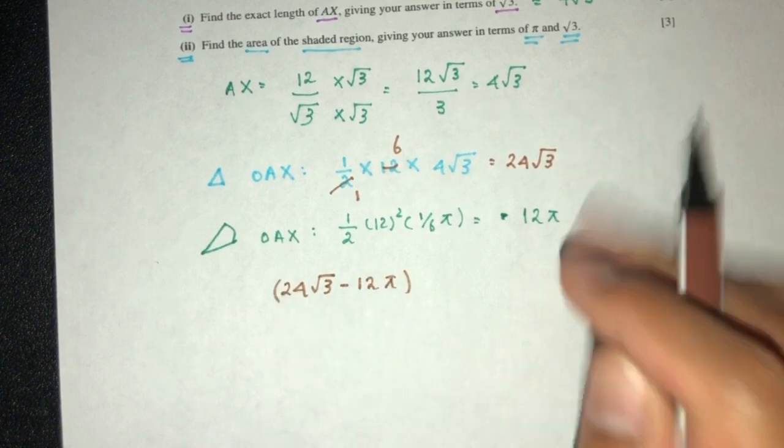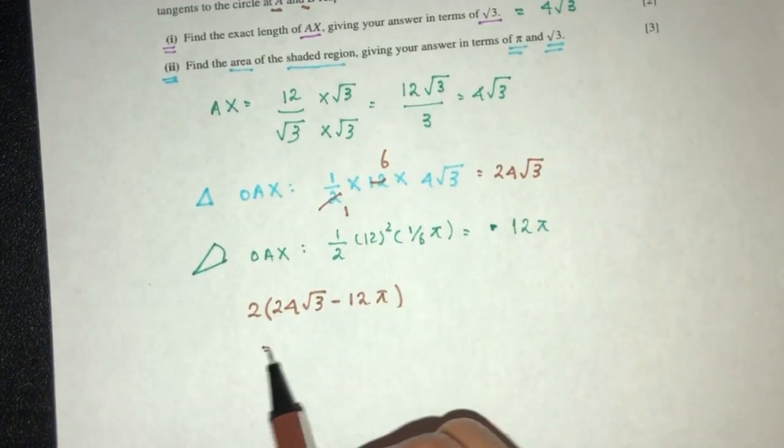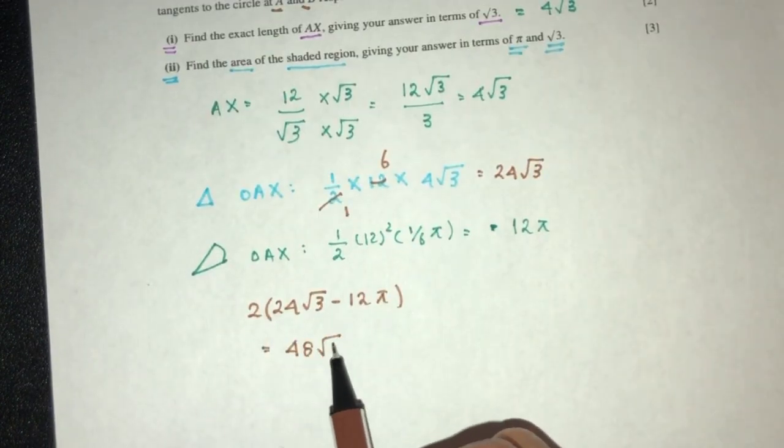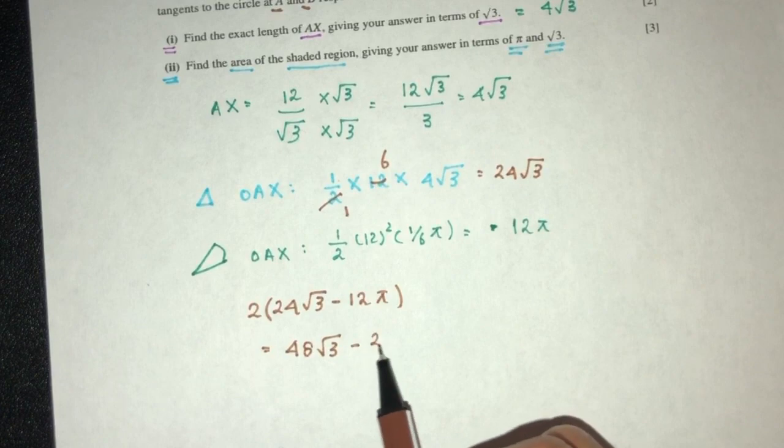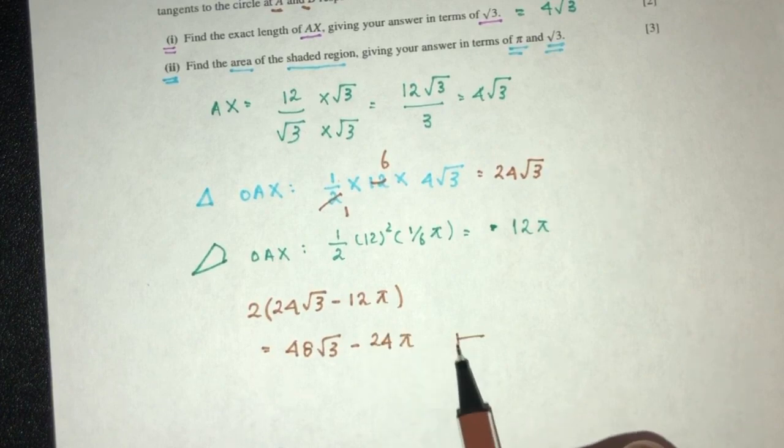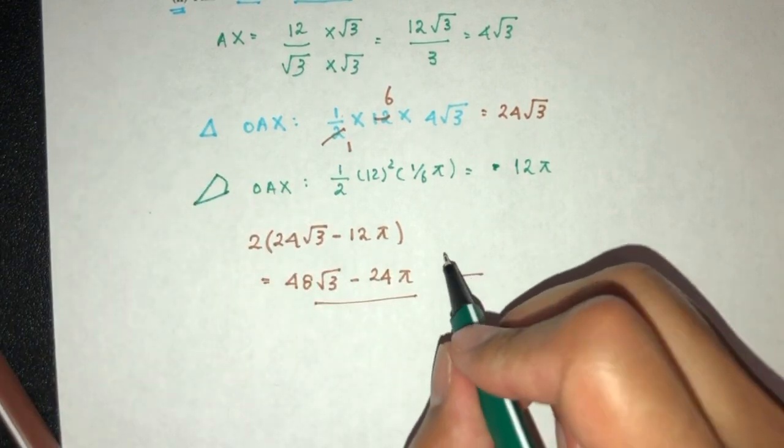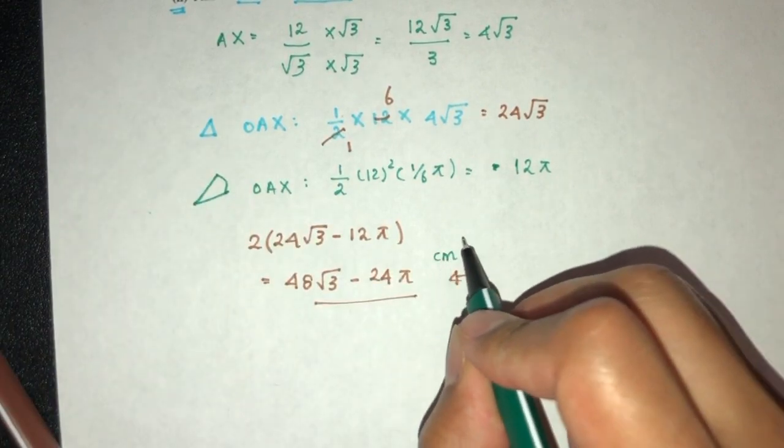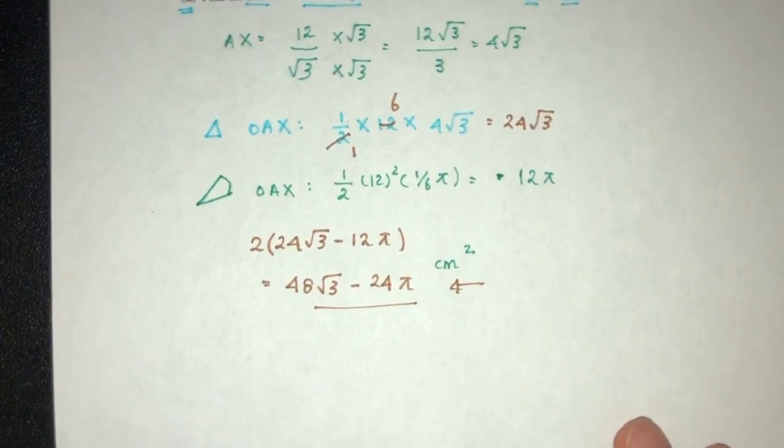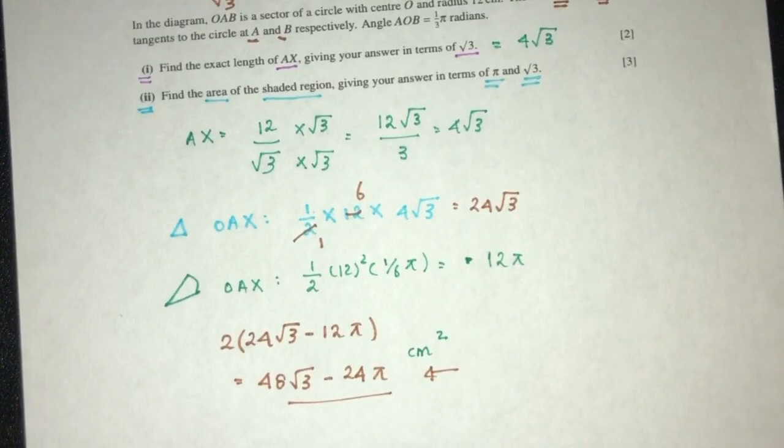But we understand that this and this are the same. So we can just multiply by 2 to find the area that we need. 48√3 minus 24π. And that will be the area in terms of π and √3. You can always write centimeters squared for the area. That's a question regarding circular measure.